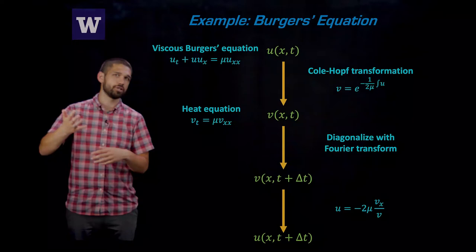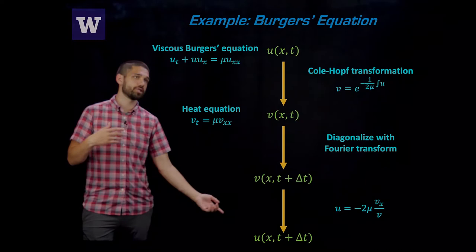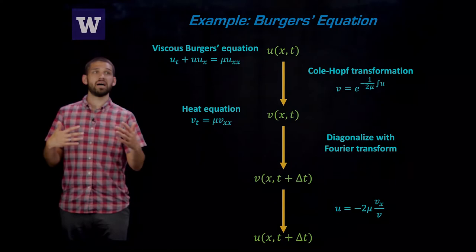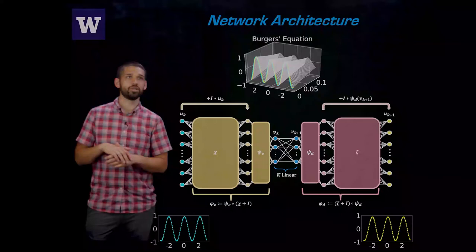One thing I'll point out is that you can diagonalize it with the Fourier transform. And once you've diagonalized, then moving forward in time is as simple as just multiplication. You multiply the eigenfunctions by some eigenvalues, and you can move forward in time by some small time step delta t. And then if we want to move back to our original system Burgers equation, you can just invert the Cole-Hopf transformation. So this is what we want to try to do. And the way we're going to try to do it is using deep learning to learn this transformation and to learn the linear dynamics.